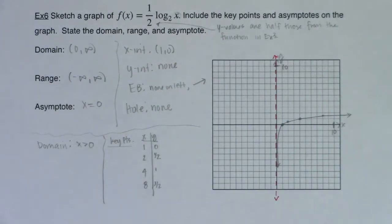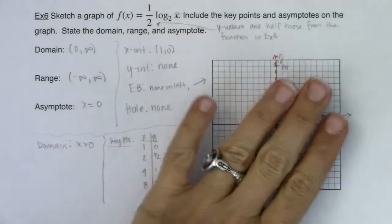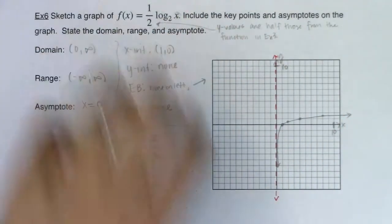So there's my next, or our next logarithmic function, graphed out, labeled and scaled. There are all my traits.